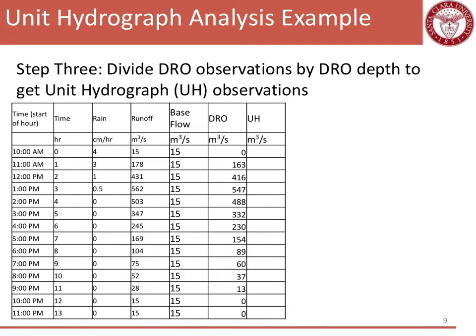Just to repeat, my direct runoff divided by 5 is going to be equal to my unit hydrograph. Easy first one, 0 divided by 5 is 0. The next one, 163 divided by 5 is going to be 32.6 CMS. I'm going to continue this for the entire table, so my next entry is 83.2 CMS. I'm going to stop this, fill in the rest of the table, and I encourage you to calculate these for yourself as well.